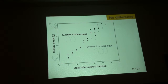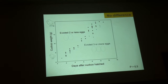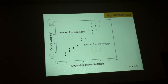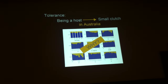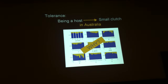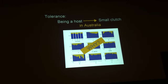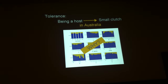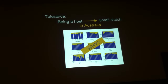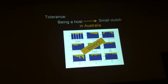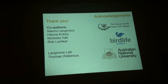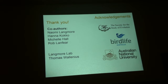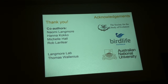So with this we cannot support the idea that cuckoos selectively target species with smaller clutches, and we cannot reject the tolerance hypothesis, at least in Australia. Maybe in Australia being a host has really led to the evolution of a smaller clutch. However, the main question now is why would this be happening only in Australia, and what is different about the Australian host-parasite system that makes it so special? I want to thank my co-authors, my supervisor, Naomi Langmore, the Australian National University funding. Thank you very much.